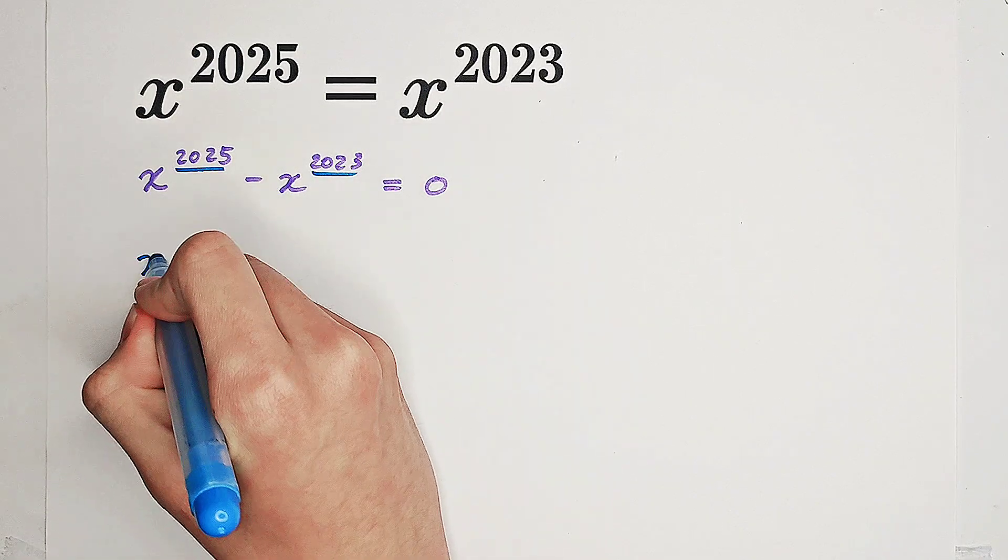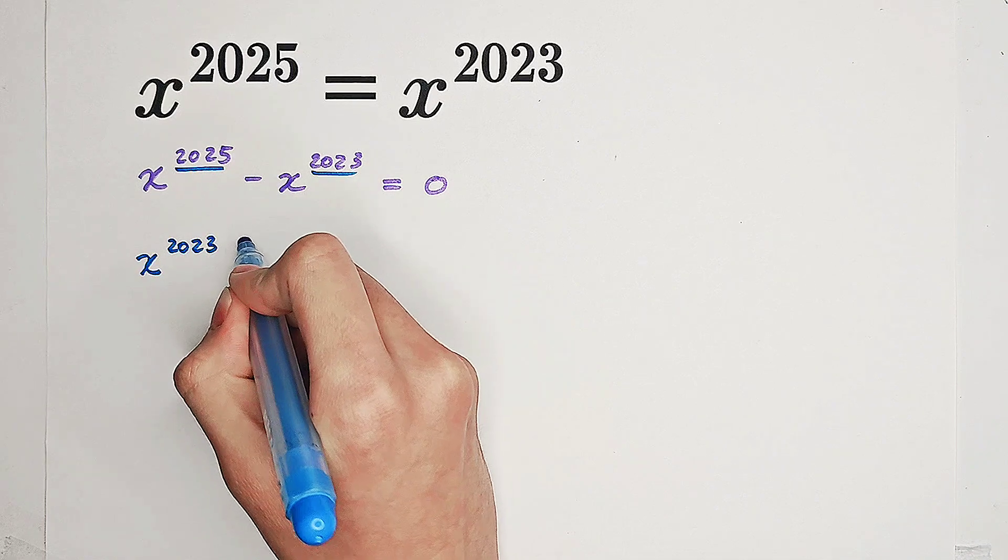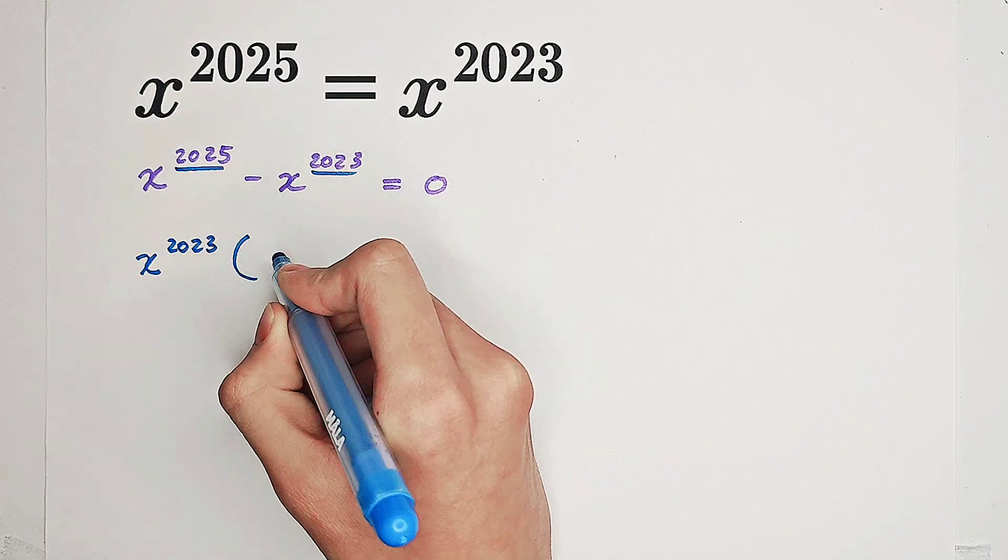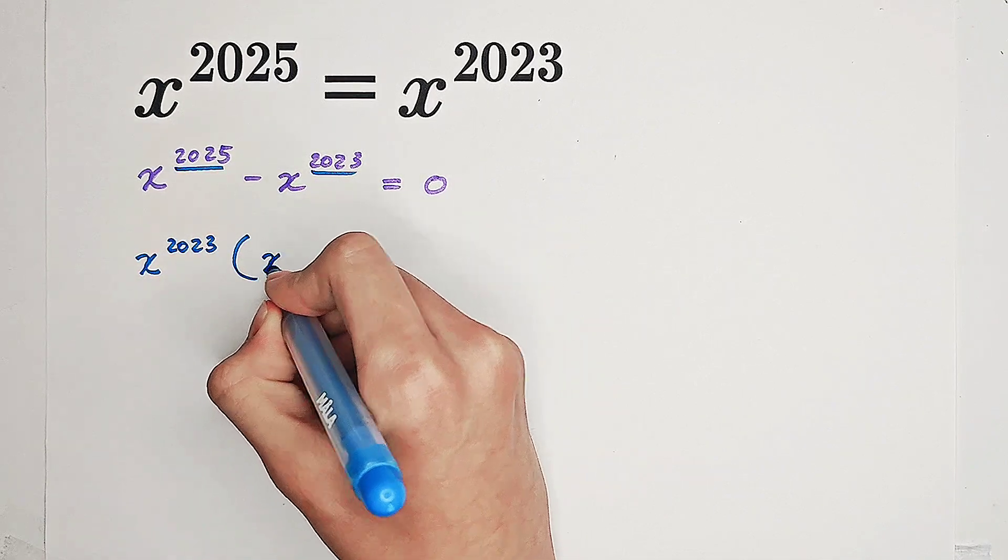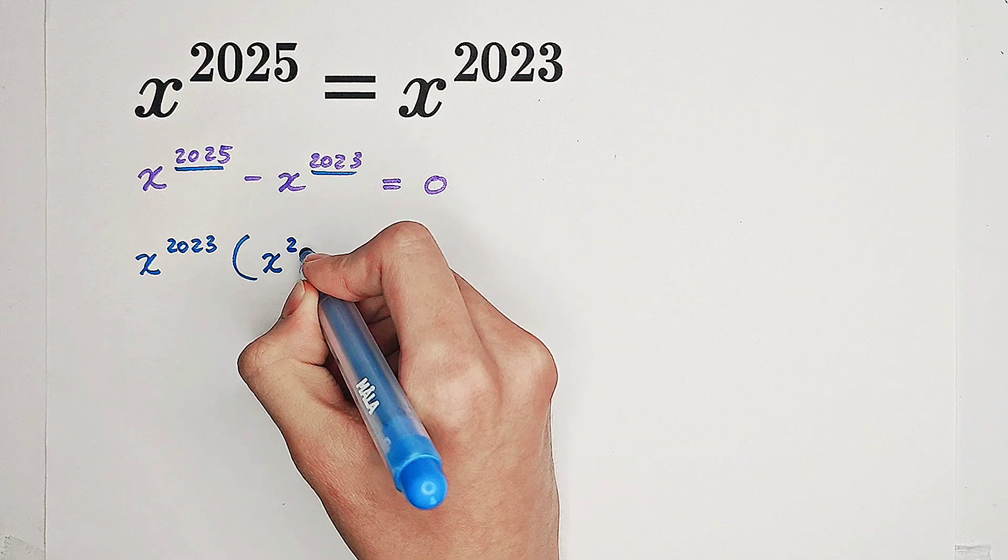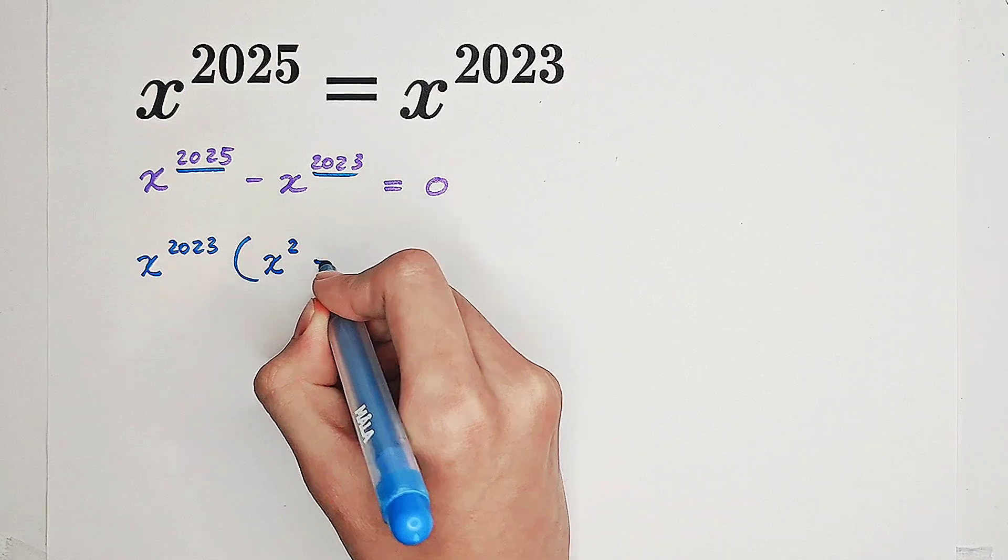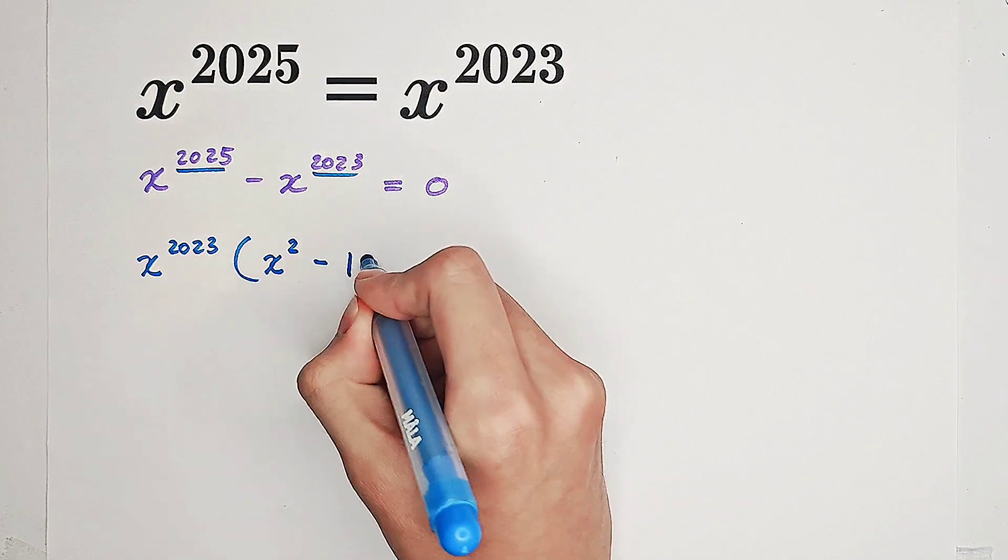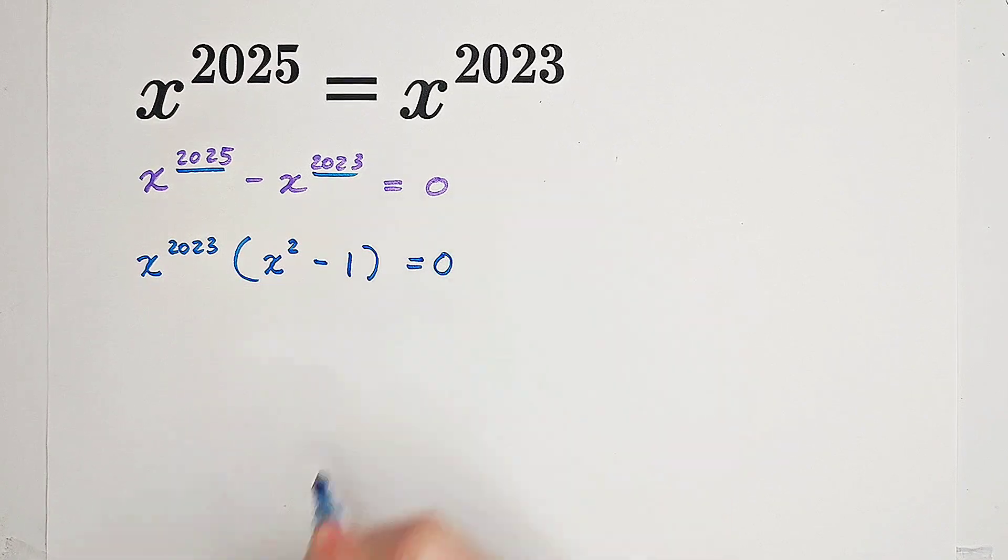We can actually factor out x^2023. Why? Because then we have in the bracket x² - 1 = 0.